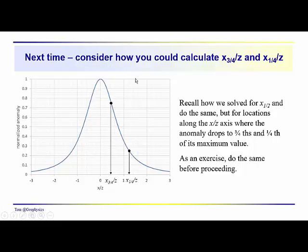So the next time we're going to, we've done this graphically, we're just kind of reading it off the normalized anomaly curve here, the shape term. We'll just kind of review the process for calculating the value of x_3/4 over z, x_1/4 over z directly. And you might try to do this before you move on to the next video. But we'll see you in the next video.